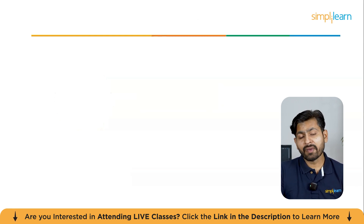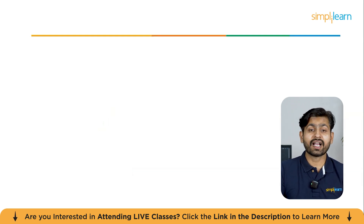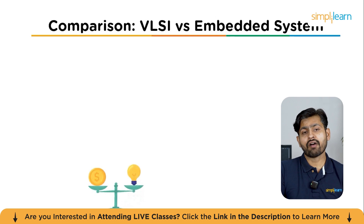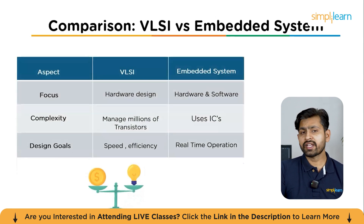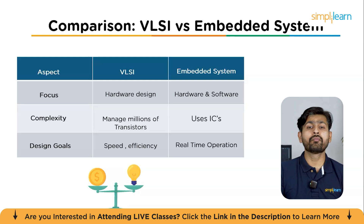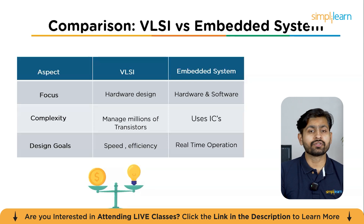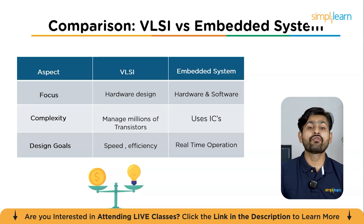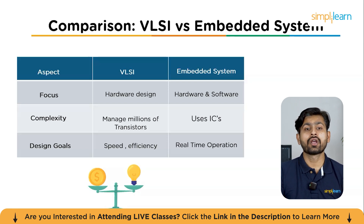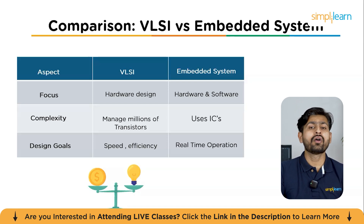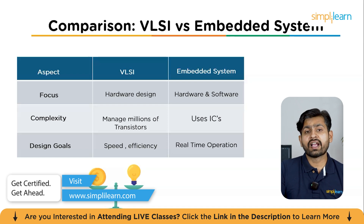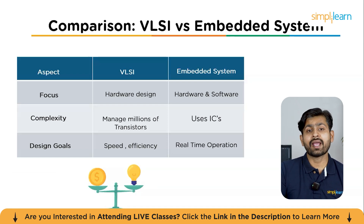Now let's compare embedded systems and VLSI. In terms of focus, VLSI focuses on building the chip itself — turning logic into a physical silicon design by choosing gates, placing and wiring them, and ensuring the chip can be manufactured. Embedded systems focus on using chips to build a working product, blending hardware like boards, sensors, and actuators with firmware so the device performs a specific task. In short, VLSI makes the brain, while embedded systems put the brain into a body and teach it to act.